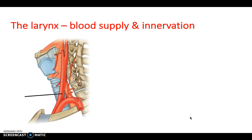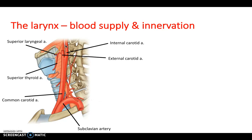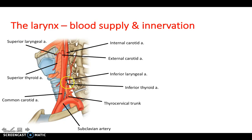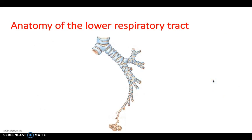For blood supply: the common carotid artery branches off the aortic arch, and the subclavian artery also arises from it. The common carotid bifurcates into the internal and external carotid — the external giving rise to the superior laryngeal and superior thyroid arteries. From the subclavian, the thyrocervical trunk bifurcates into the inferior thyroid and inferior laryngeal. Innervation to the larynx is via the superior laryngeal and the recurrent laryngeal nerve — clinically important for nerve lesions.